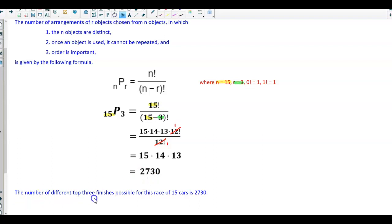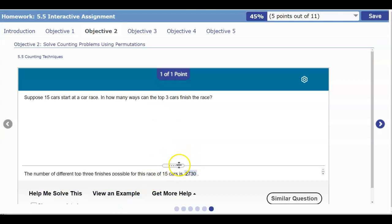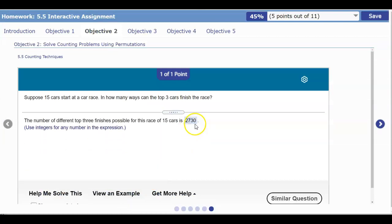The number of different top 3 finishes possible for this race of 15 cars is 2,730, which is our answer in MyStatLab.